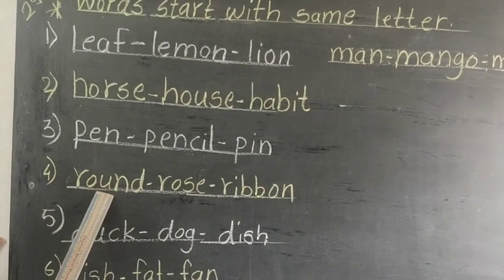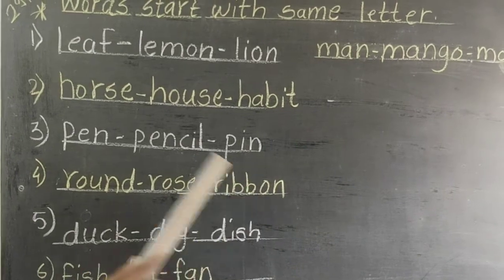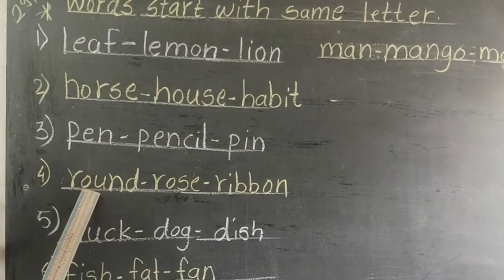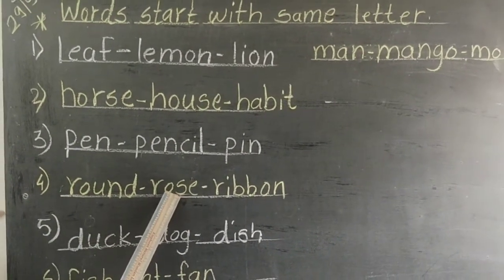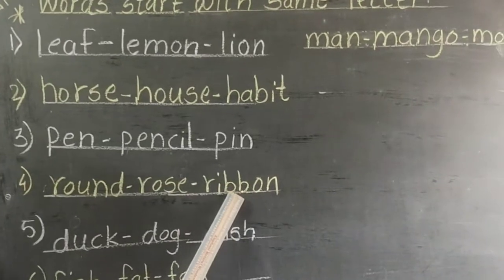Fourth, round, rose, ribbon. Round means goal, rose means gullab, ribbon means ribbon.